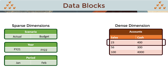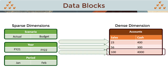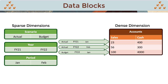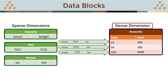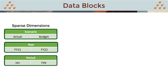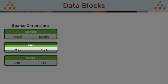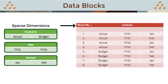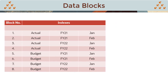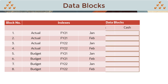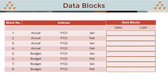Information is stored in data blocks. Each data block is created for a unique combination of sparse dimension members and holds values for the members of a dense dimension. For example, if you have three sparse dimensions with two members in each dimension, eight unique combinations of sparse dimension members can be generated. The combinations of sparse members are also known as indexes. Each of these combinations can point to a potential data block in a dense dimension member.